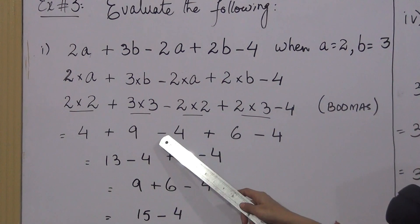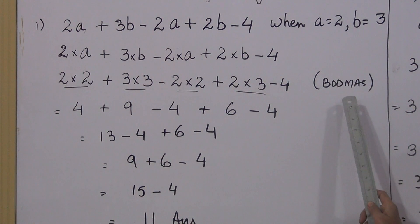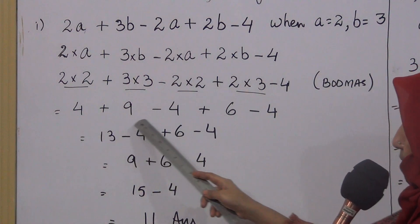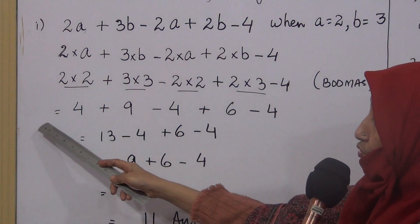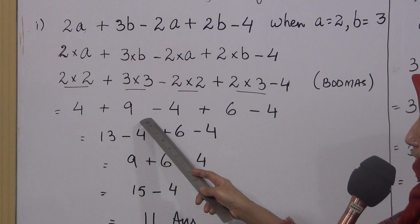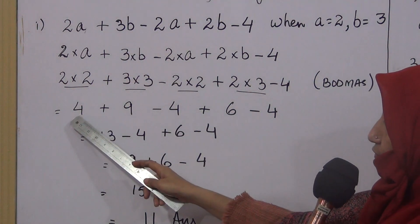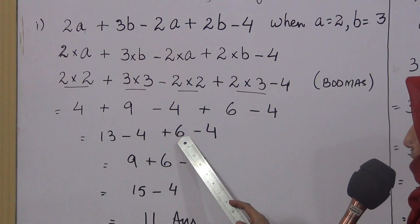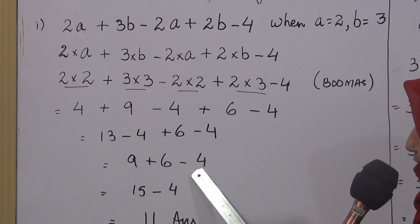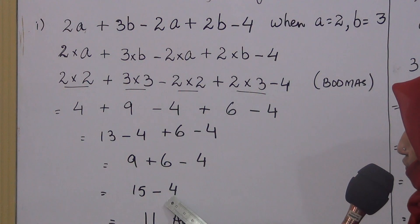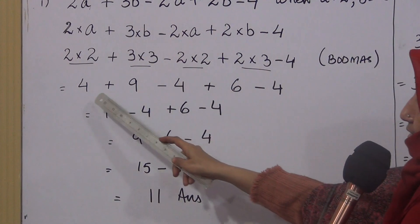Now we have one addition operator and one subtraction operator remaining. According to BODMAS, addition comes before subtraction. But there is another BODMAS rule: if the expression has only plus and minus operators, we can solve the expression from left to right. So: 4 plus 9 is 13, minus 4, plus 6, minus 4. Then 13 minus 4 is 9, plus 6 is 15, minus 4 gives 11.